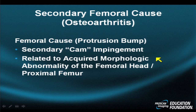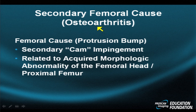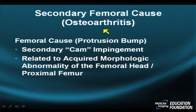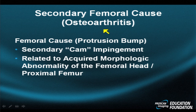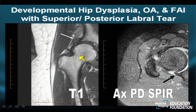Another look-alike for the classic form of FAI type 1, also known as cam-type impingement, is secondary impingement. The most common cause of secondary impingement is osteoarthritis. Anything that gives you a bump in that location can give you impingement discomfort when the leg is brought up in flexion and then internally rotated. We see osteoarthritic spurs in this region all the time.